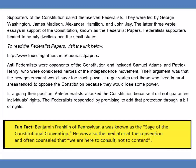Supporters of the constitution called themselves Federalists. They were led by George Washington, James Madison, Alexander Hamilton, and John Jay. The latter three wrote essays in support of the constitution known as the Federalist Papers. Federalist supporters tended to be city dwellers in the small states. Anti-Federalists were opponents of the constitution and included Samuel Adams and Patrick Henry, who were considered heroes of the independence movement. Their argument was that the new government would have too much power. Larger states and those who lived in rural areas tended to oppose the constitution. Anti-Federalists attacked the constitution because it did not guarantee individuals' rights. The Federalists responded by promising to add that protection through a Bill of Rights.